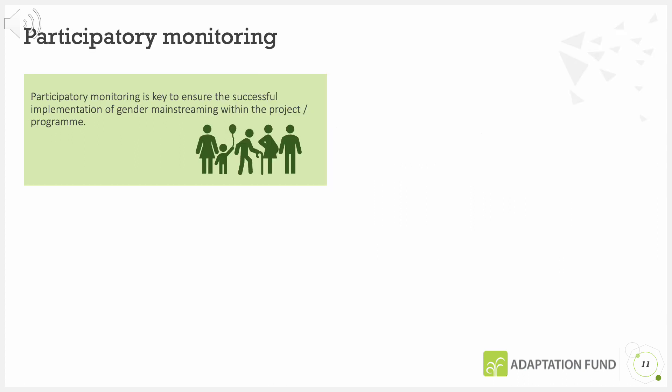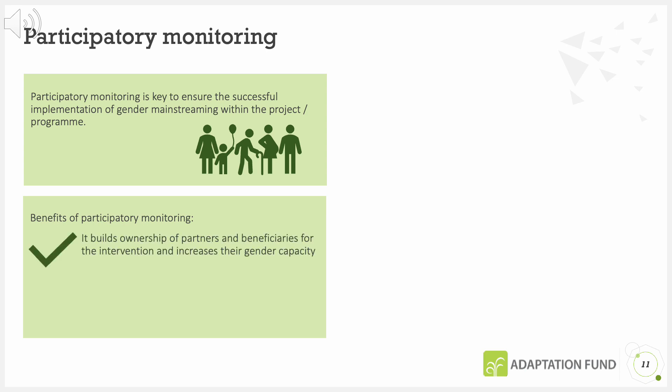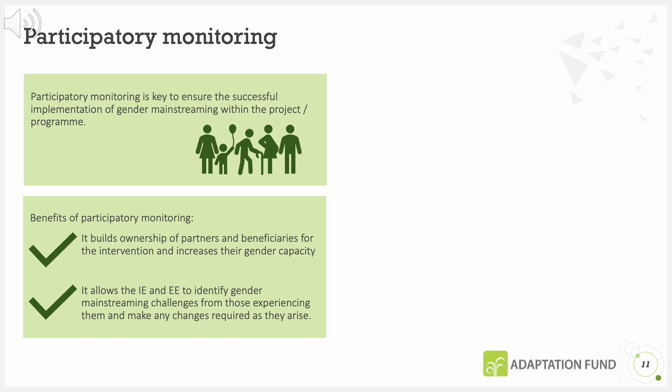Participatory monitoring is key to ensure the successful implementation of gender mainstreaming within the project or programme. The benefits of participatory monitoring are: building ownership of partners and beneficiaries for the intervention and increasing their gender capacity, and it allows the implementing entity and executing entities to identify gender mainstreaming challenges from those experiencing them and make any changes required as they arise.